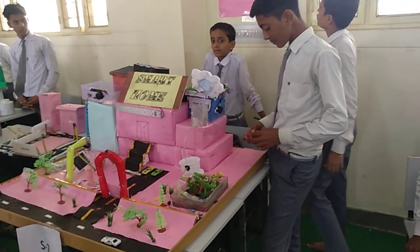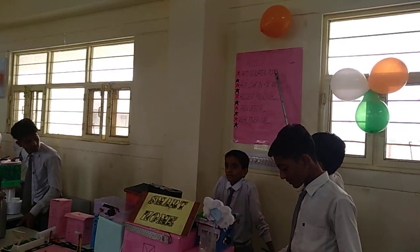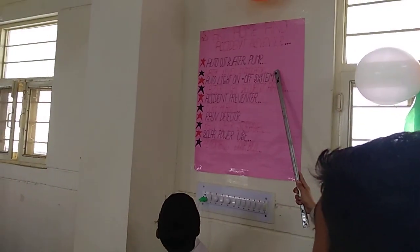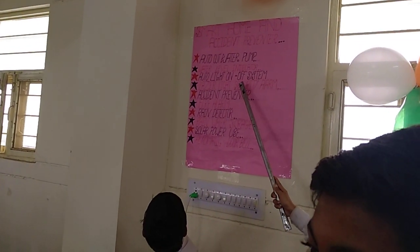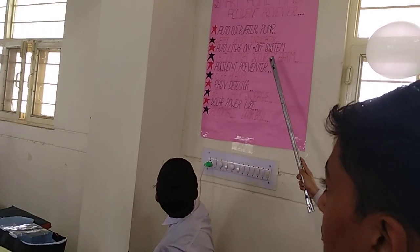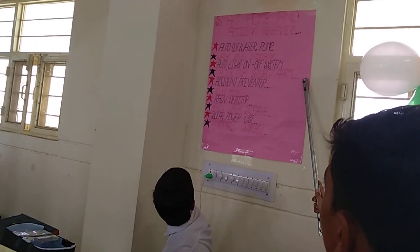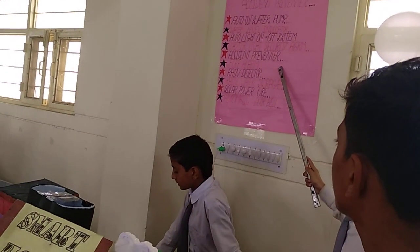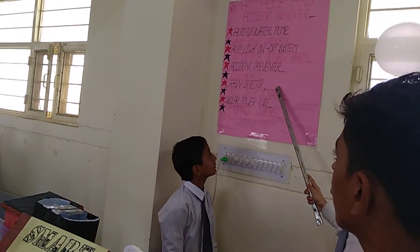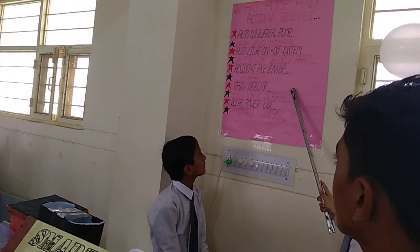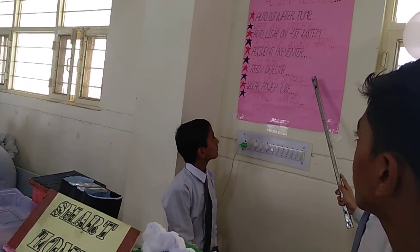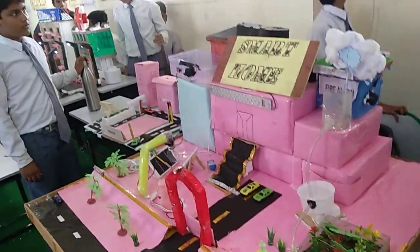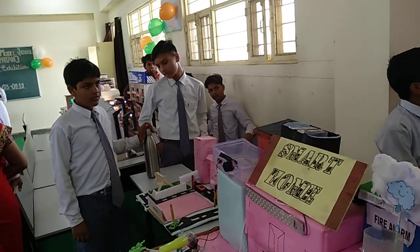The first system of my model is Auto Cut Water Pump. The second system is Water Level Indicator. The third system is Auto Light On-Off System. The fourth system is Laser Light Security Alarm. The fifth system is X-ray Preventer. The sixth system is Fire Alarm. The seventh system is Rain Detector. The eighth system is Rain Water Storage. The ninth system is Solar Power Use. And the last system is Automatic Tool Well.